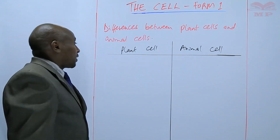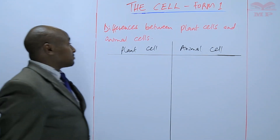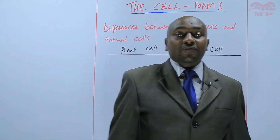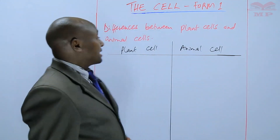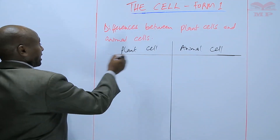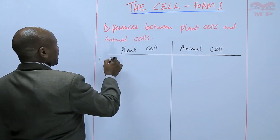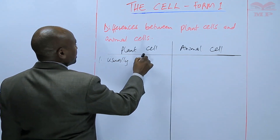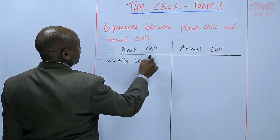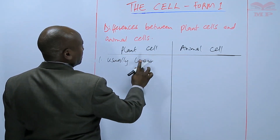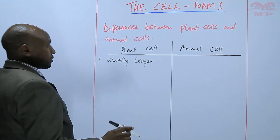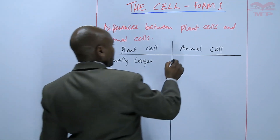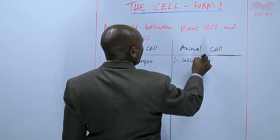One of the differences between a plant cell and an animal cell is in terms of size. A plant cell is usually larger compared to the animal cell, so the animal cell is usually smaller.